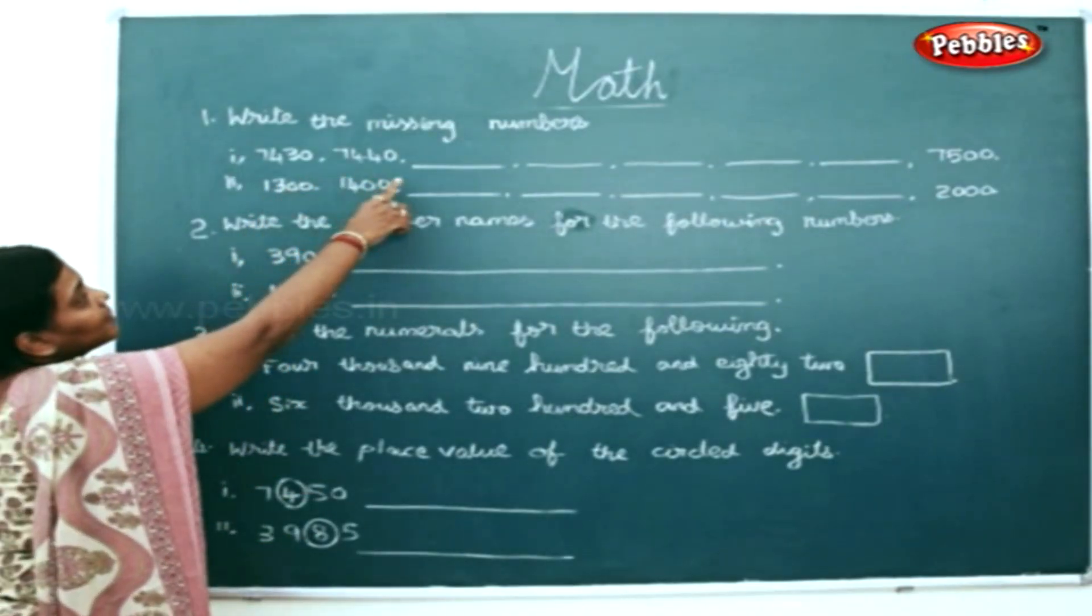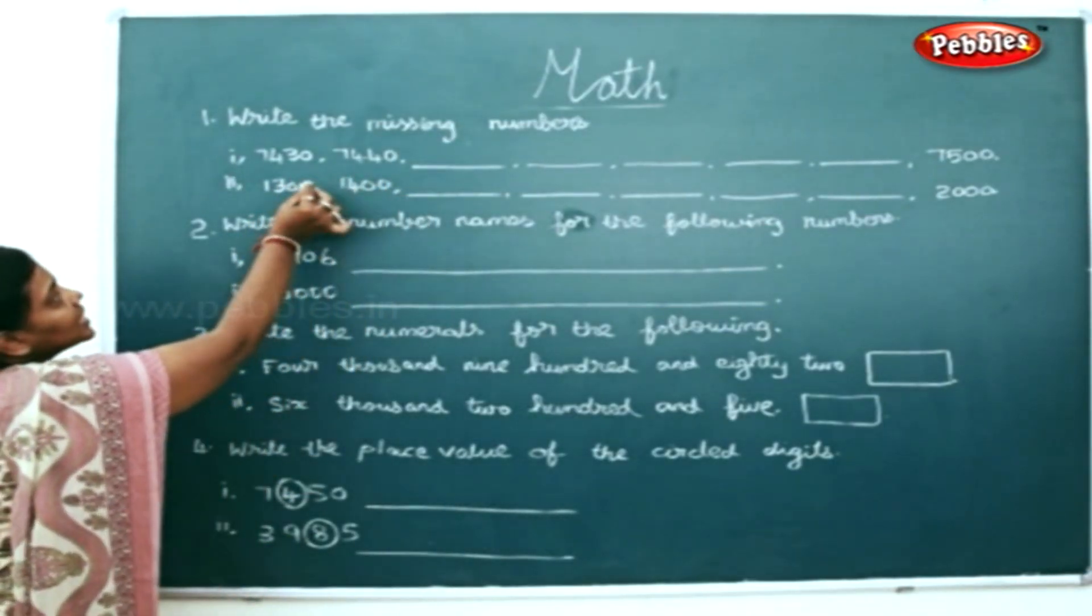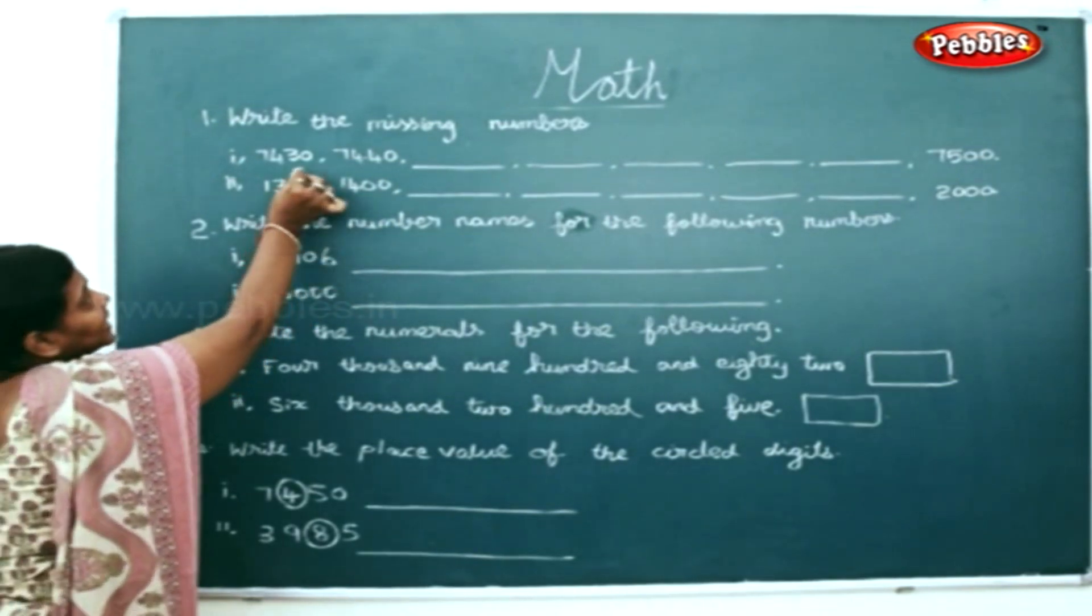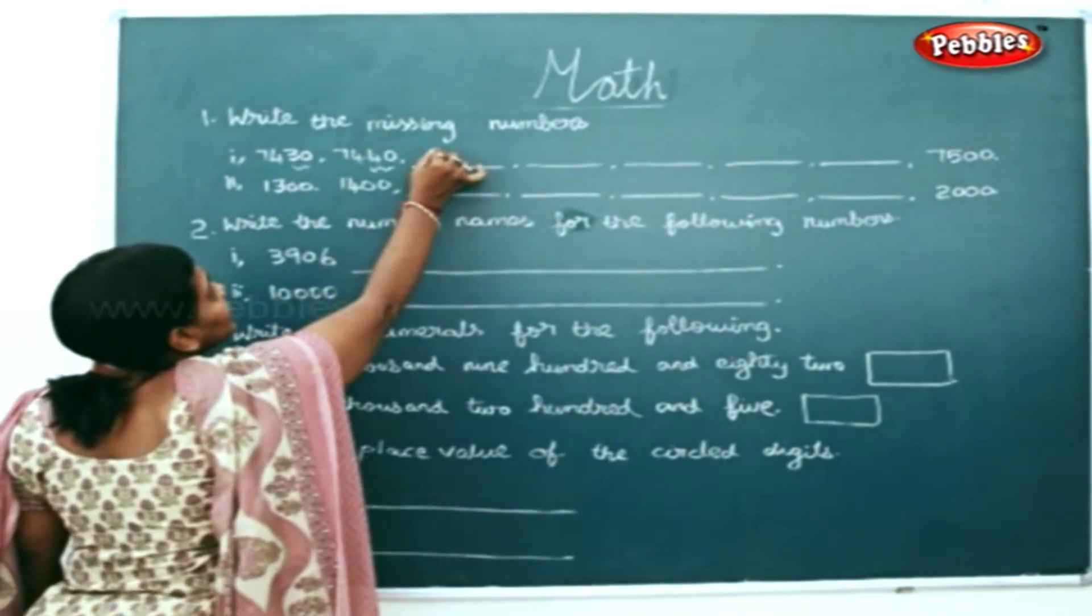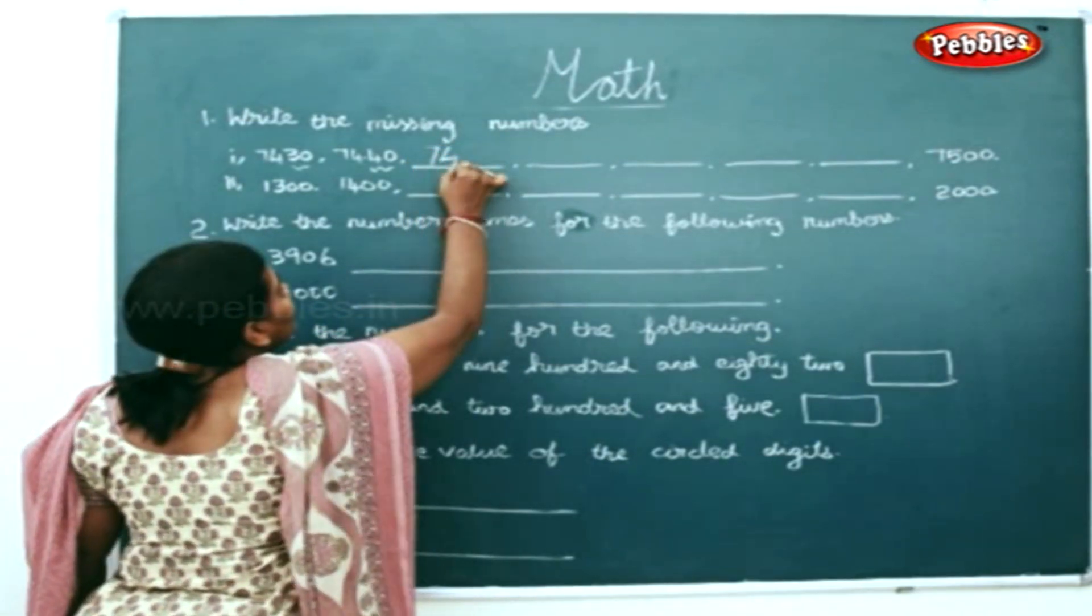Now we will write the missing numbers for the following. These are also called jumping numbers. From 30 it jumped to 40, next it will jump to 50.